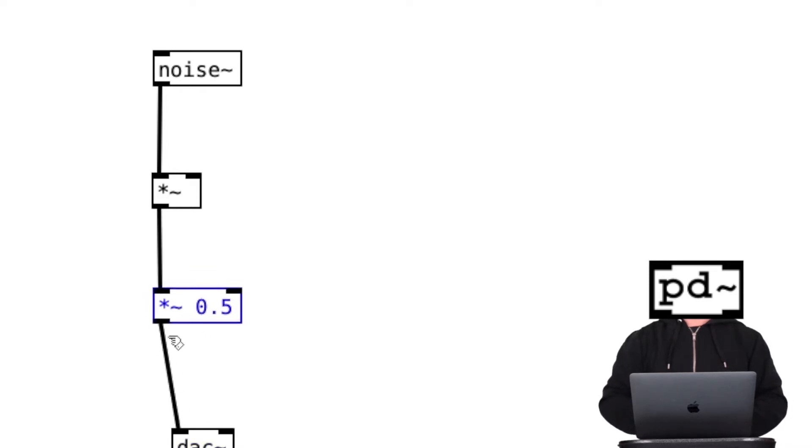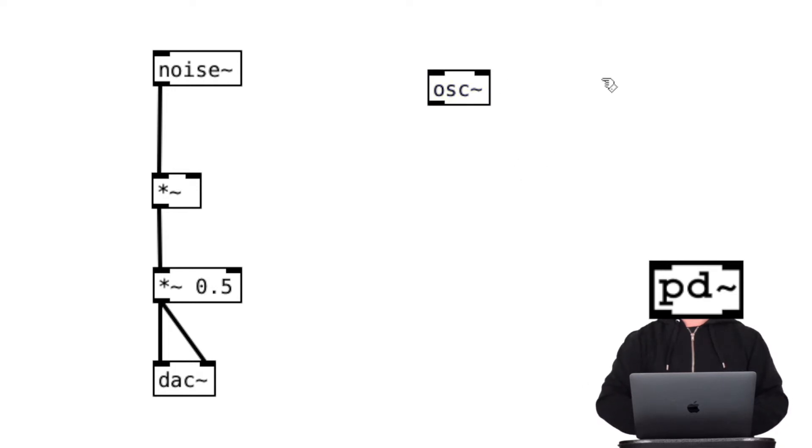Okay, so no sound will come out because we haven't set the volume parameter with this Times Tilda object right here. This is where an LFO will come in. So create a Number object and an Oscillator. And connect like so.